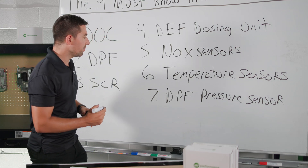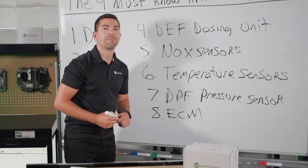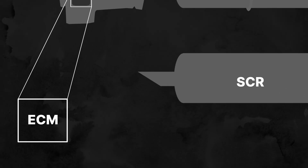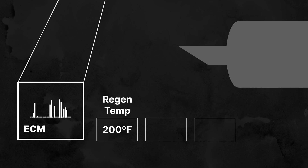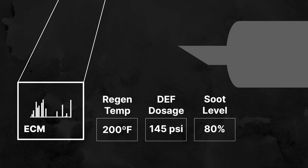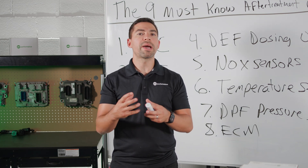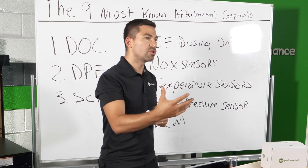The eighth after-treatment component is called the ECM, which stands for Engine Control Module. The ECM regulates everything regarding your after-treatment system — it monitors regen temperatures, DEF dosage, and soot level before putting you into a D-rate. If anything is going on with your after-treatment components, it reports information back to the Engine Control Module to display fault codes.